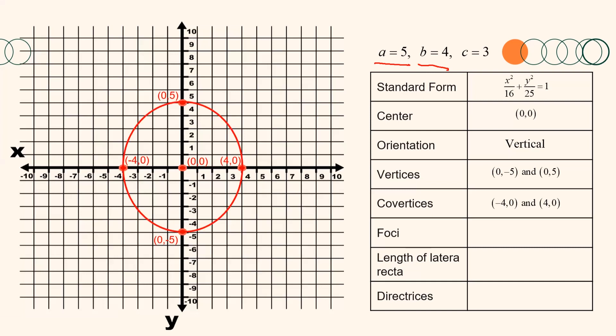The foci are collinear with the vertices, so they are also above and below the center, 3 units away since c equals 3. Thus, the foci are the points (0, negative 3) and (0, 3). The length of the latera recta is represented by 2b squared over a. Substituting the values, we get 2 times 16 over 5, which equals 32 over 5 units. Finally, since the ellipse is vertically oriented, the directrices are horizontal lines with the equation y equals positive or negative a squared over c, giving us y equals 8.33 and y equals negative 8.33.